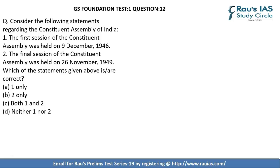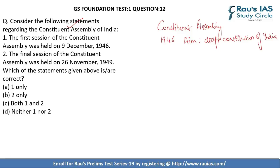Question 12 contains two statements about the Constituent Assembly of India. The first statement — the first session of the Constituent Assembly was held on 9th December 1946 — is correct. The second statement — the final session was held on 26th November 1949 — is incorrect, as the final session was held on 24th January 1950. The correct option is A, statement 1 only.